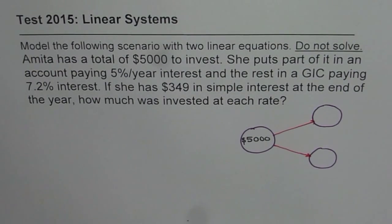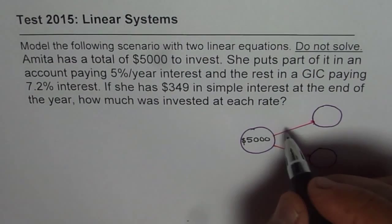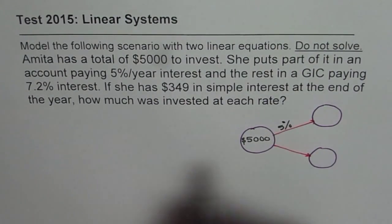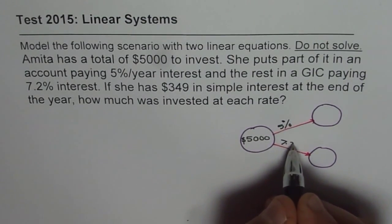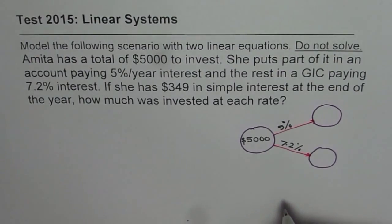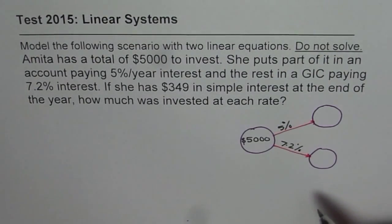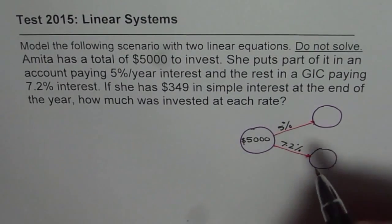Now what we are given here is that at one place the interest rate is 5% and at the other, which we are calling as GIC, that pays 7.2%. Now how much was invested at each rate? That is not known to us. So let that be the variable.